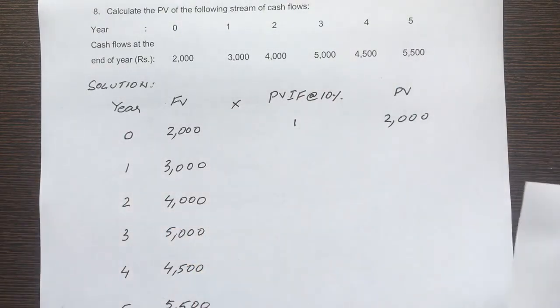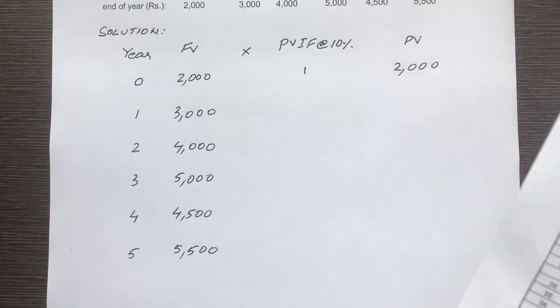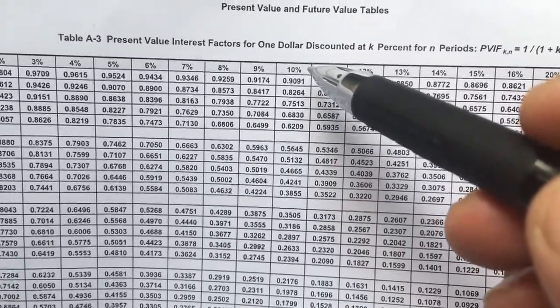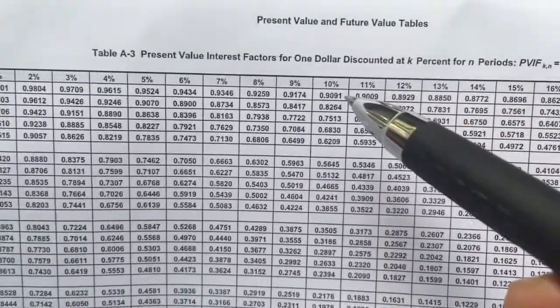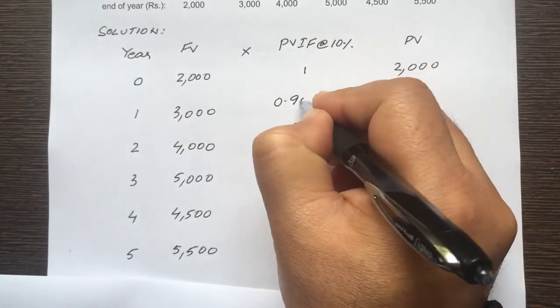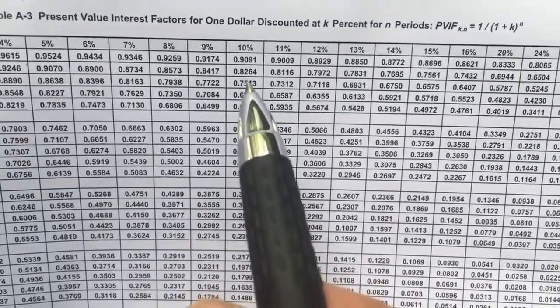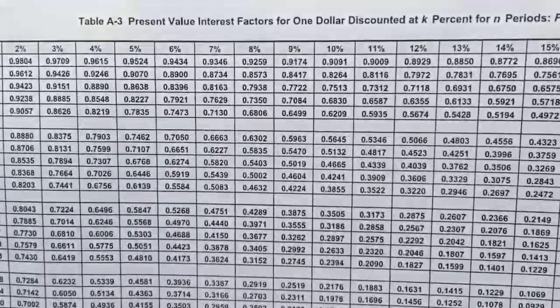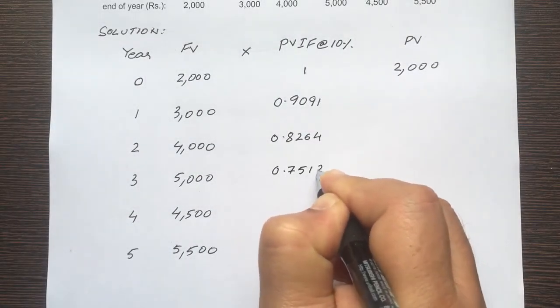Now find out what is the PVIF at 10% for the other years: year 1, 2, 3, 4, and 5. Now again, let's look at that table. So what is the discount rate? 10%, alright. So for year 1 it is 0.9091. For year 2 it'll be 0.8264. For year 3, 0.7513.